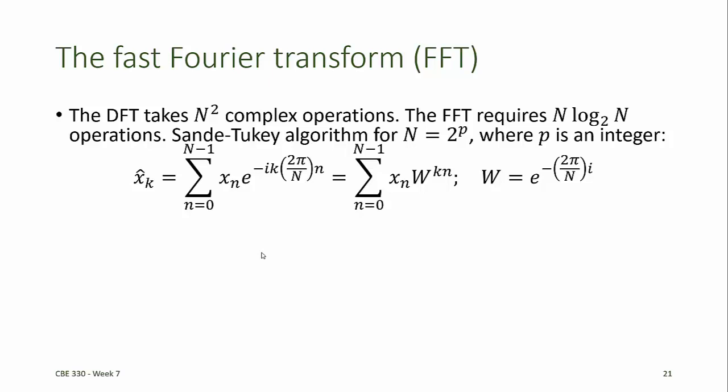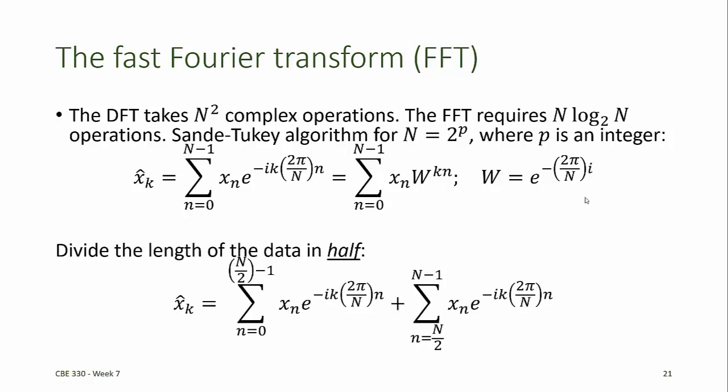we choose values of omega so that the frequencies are whole number multiples of 2 pi divided by n. Then, we call this exponential term w, where w just depends on the number of data points n. Then we divide the length of the data in half. So we take a summation over the first n by 2 data points and an equivalent summation over the next n by 2 data points.